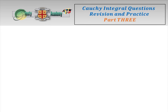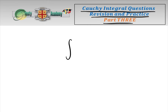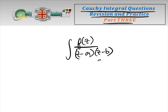We've reached part three of our three-part video series on Cauchy Integral Questions: Revision and Practice. In this video we're going to deal with situations where there are multiple poles or singularities — for example, the integral of f(z) over (z minus a)(z minus b), where z equals a and z equals b are both singularities or poles.